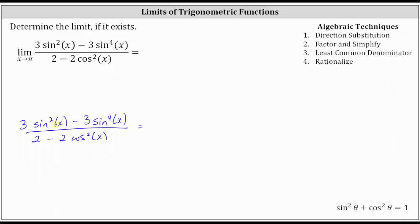So let's factor out three sine squared x from the numerator, which gives us three sine squared x times the quantity one minus sine squared x. And let's factor out two from the denominator, which gives us two times the quantity one minus cosine squared x.